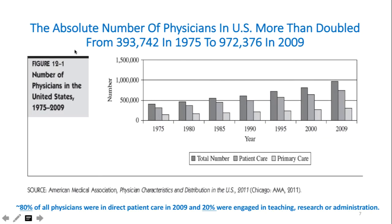The number of physicians in the United States more than doubled during the past three decades. About 80% of all physicians were in direct patient care in 2009, while 20% were engaged in teaching, research, or administration. Primary care showed some increase over time, but not proportionally as large as the overall increase.